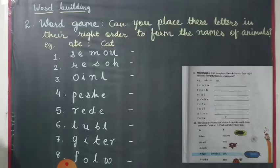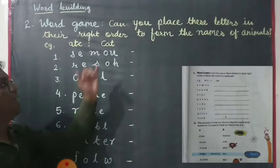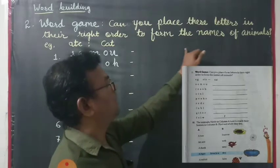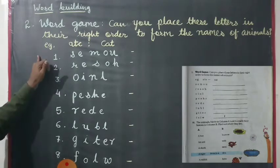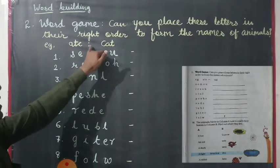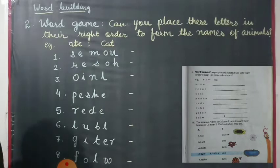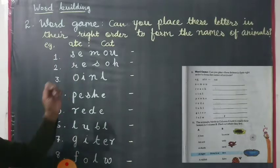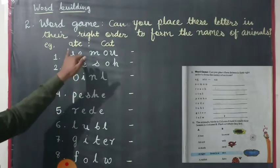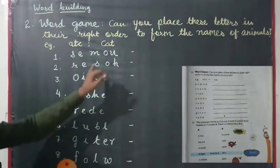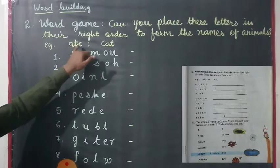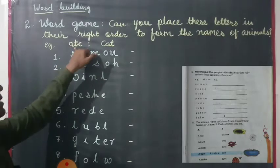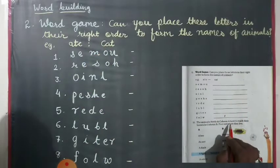Now activity number two — word game. Can you place these letters in their right order to form the names of animals? For example, A-D-C — the right name is cat. Here we rearrange the letters given in this activity to form the right names of animals. We first put the letter C, then A, then T — and we form the name of the animal: cat.